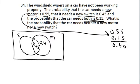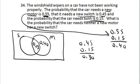Notice that 0.40 and 0.15 gives the 0.55 back. I also know the probability that it needs a new switch is 0.45, so if I take 0.45 and subtract off the 0.15 already counted in the overlap, I end up with 0.30 for the switch-only region.